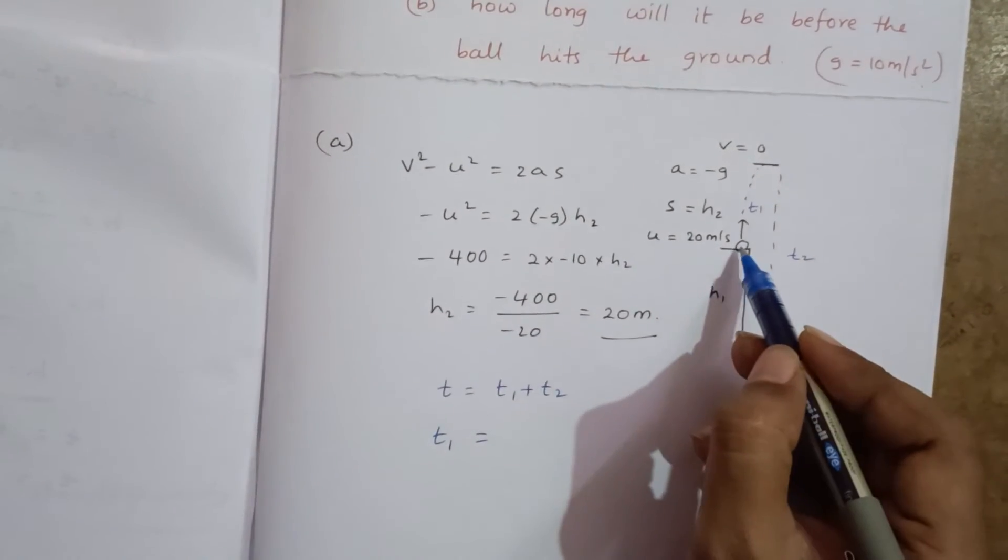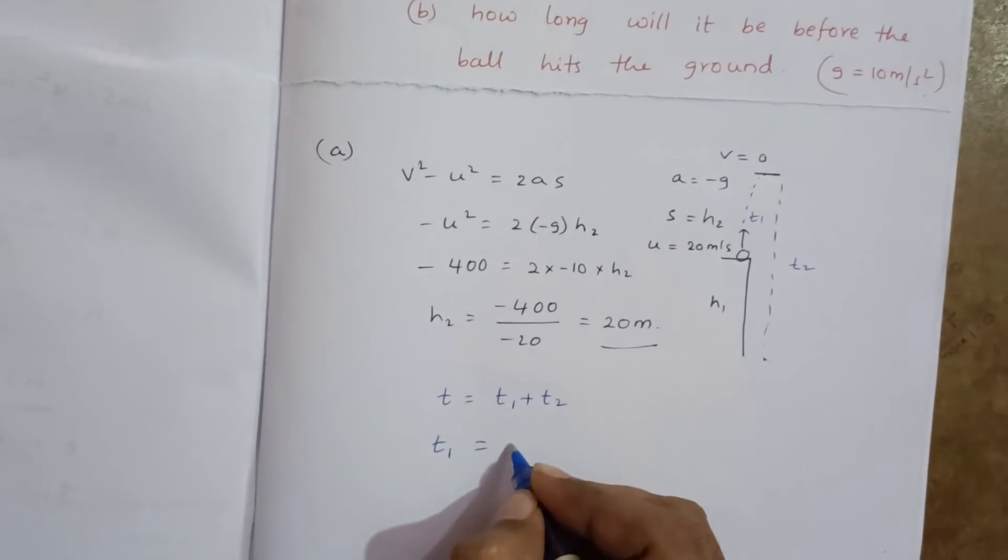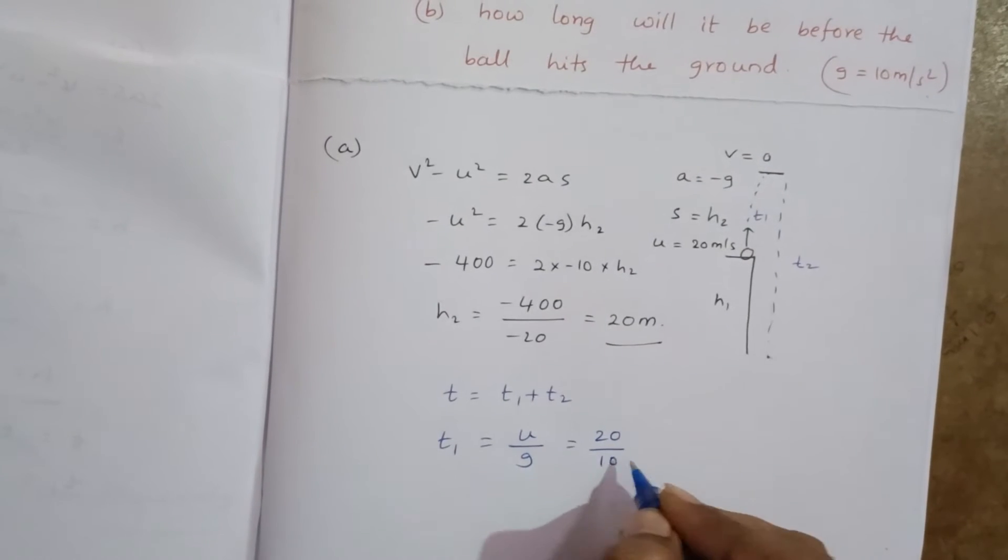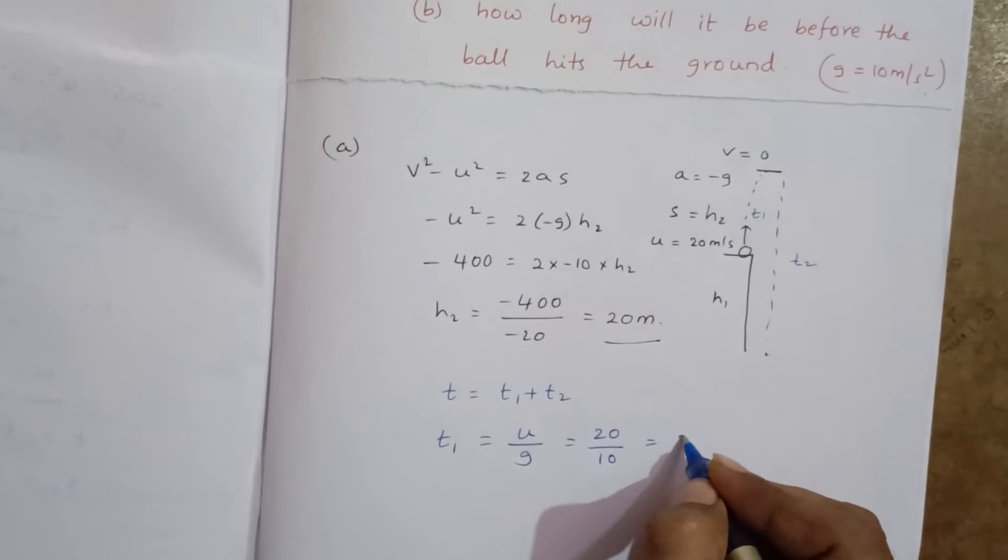Now here t₁ we can take time of ascent. Initial velocity given, going up, u by g. So 20 by 10 equal to 2 seconds.